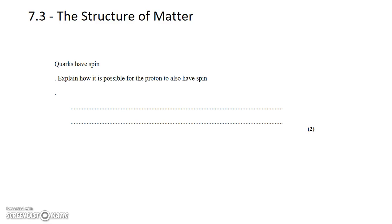David Kahn here with another Question Bank question in topic 7.3. This question says that quarks have spin. Explain how it's possible for the proton to also have spin.